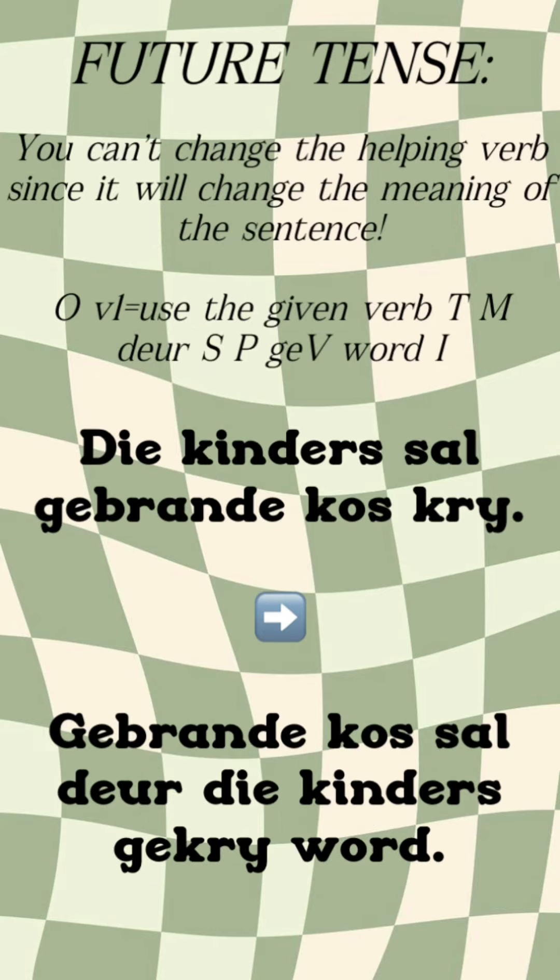Then future tense is also a little bit tricky. You can't change helping words because that would change the meaning of the sentence. So you would actually use the given helping verb they've given you, but because helping verbs are so weak, they also need a 'word' after the ge-verb. So 'Kinders sal gebrande kos kry' becomes 'Gebrande kos sal deur die kinders gekry word.'